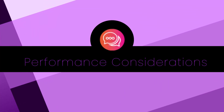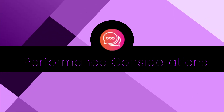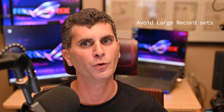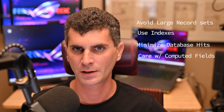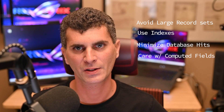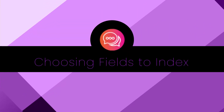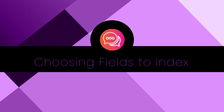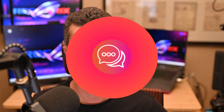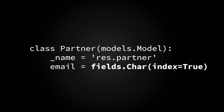Performance considerations. While Odoo's ORM provides a lot of convenience, it's important to be aware of the performance implications of your database interactions. Here are a few key points to consider: avoid large record sets, use indexes, minimize database hits, and take care with computed fields. Indexes are a key component in optimizing database performance in Odoo. They speed up the retrieval of rows from the database, but come at a cost of additional storage space and slower write operations.